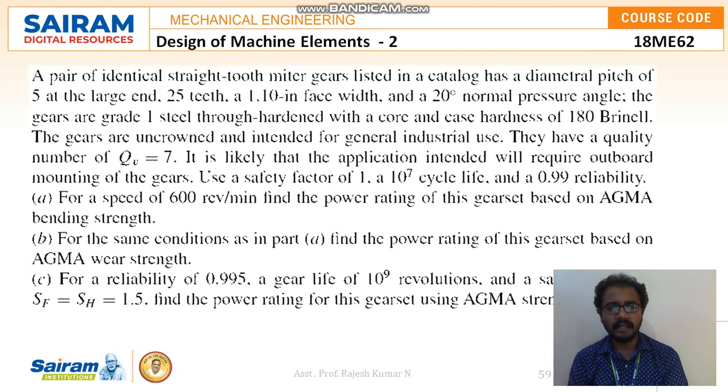The gears are uncrowned and intended for general industry use. They have a quality number of 7. It is likely that application intended will require outboard mounting of the gears. Use a safety factor of 1, 10 to the power 7 cyclic life and 0.99 reliability. For the speed of 600 rev per minute find the power rating of the gears based on AGMA strength and for the same condition as in part A find the power rating of the gear set based on AGMA gear strength.